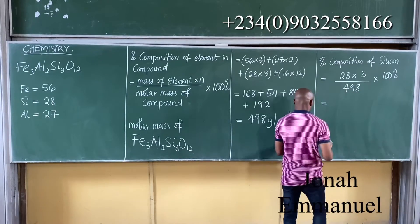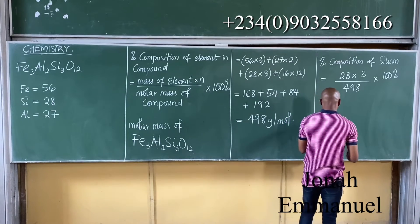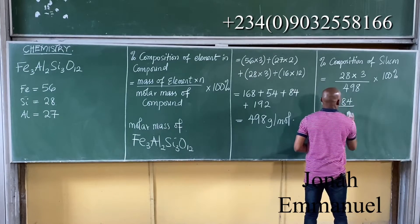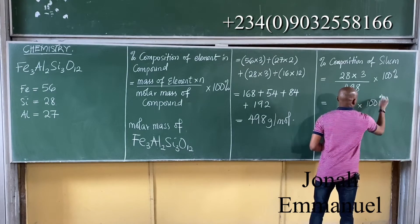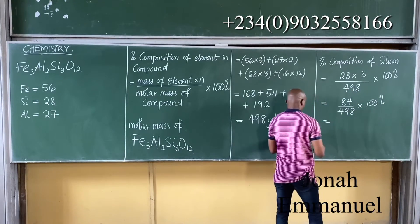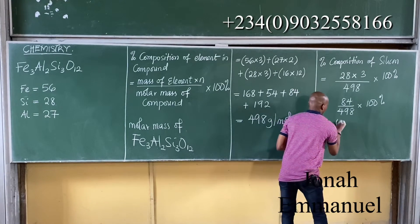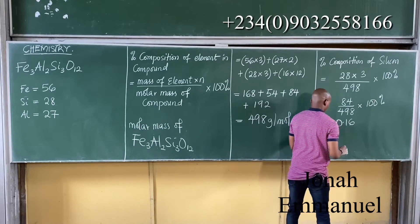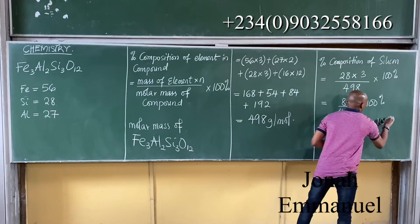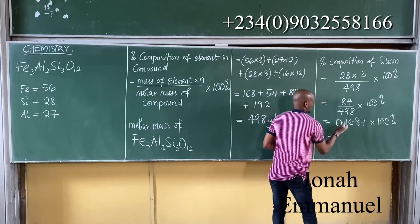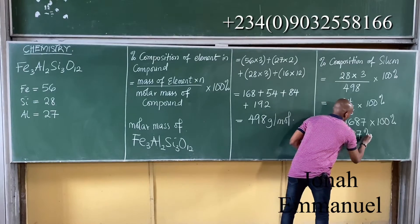To work on this, I will have this as being equal to 84 over 498 times 100%. That's about 0.1687 approximately times 100%. What I get here is 16.87%.